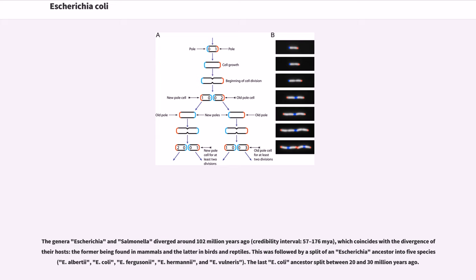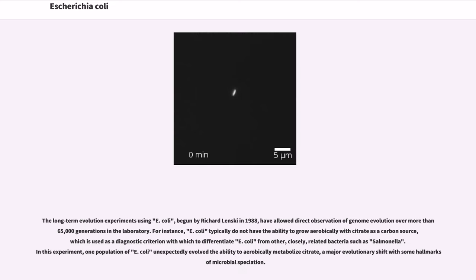The genera Escherichia and Salmonella diverged around 102 million years ago, which coincides with the divergence of their hosts, the former being found in mammals and the latter in birds and reptiles. This was followed by a split of an Escherichia ancestor into five species. The last E. coli ancestor split between 20 and 30 million years ago. The long-term evolution experiments using E. coli, begun by Richard Lenski in 1988, have allowed direct observation of genome evolution over more than 65,000 generations in the laboratory. For instance, E. coli typically do not have the ability to grow aerobically with citrate as a carbon source, which is used as a diagnostic criterion to differentiate E. coli from related bacteria such as Salmonella. In this experiment, one population of E. coli unexpectedly evolved the ability to aerobically metabolize citrate, a major evolutionary shift with some hallmarks of microbial speciation.